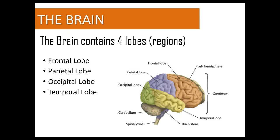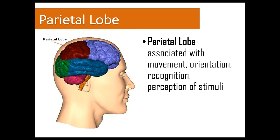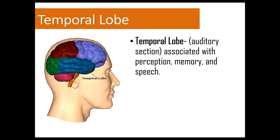Now we're going to go through some different parts of the brain — simplified, but important for you to understand the four lobes and how they relate to forensics. The frontal lobe is associated with reasoning, planning, parts of speech, emotions, and problem solving. The parietal lobe is associated with movement, orientation, recognition, and perceiving certain stimuli. The occipital lobe is associated with visual processing. The temporal lobe is associated with auditory perception, memory, and speech.